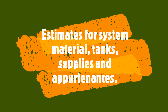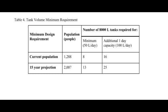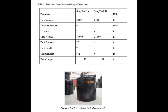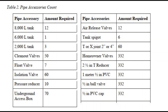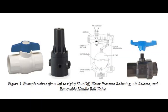Estimates for materials and supplies, tanks, appurtenances, and everything else had to be calculated and listed. Tables of quantities and descriptions are provided for the community. This information is required by the government, who will be providing funding for the project.